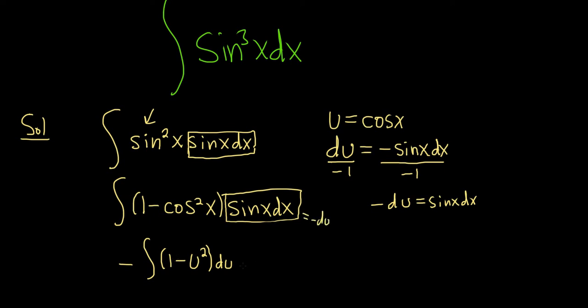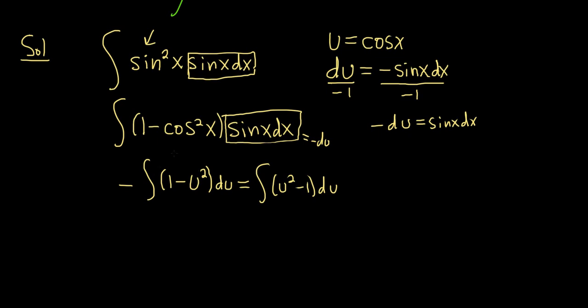And we get 1 minus u squared. Let's go ahead and distribute that negative 1. It's really bothering me. So when you distribute it, you just get u squared minus 1. You just flip the signs. Distribute it to the 1, it becomes negative 1. Distribute it here, it becomes positive.